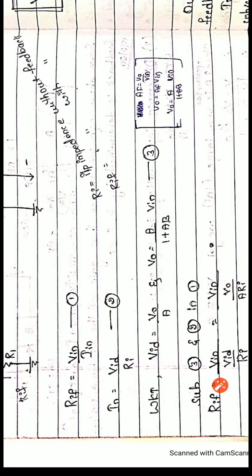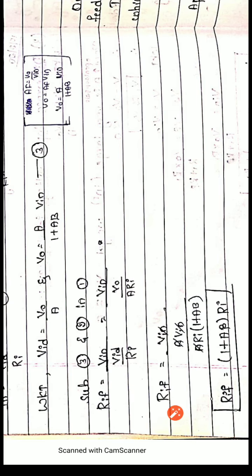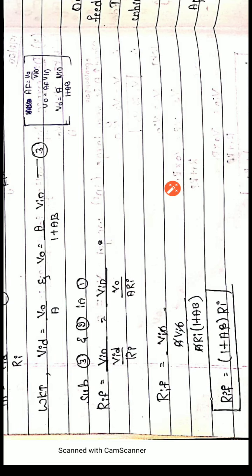Now substituting Equations 2 and 3 into Equation 1: RIF = VIN / IIN. Replacing IIN with VID/RI, and VID with V0/A, we get RIF = VIN / (V0 / (A·RI)). Substituting V0 = A·VIN / (1 + Aβ), this becomes RIF = VIN · A·RI / (A·VIN / (1 + Aβ)), which simplifies to RIF = A·VIN·RI·(1 + Aβ) / (A·VIN).